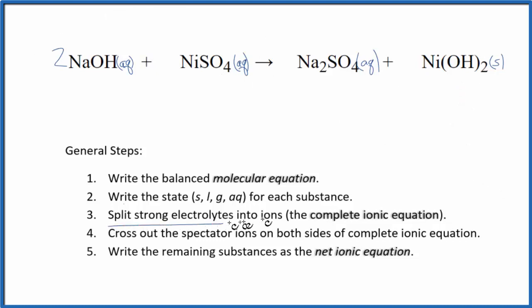Now we can split the strong electrolytes into their ions. This is the complete ionic equation. Sodium is in group one, so it has a one plus charge, and the hydroxide, that's always one minus. So we have two sodium ions, and I won't write the states right now. Let's do that at the end. So we have two sodium ions plus two hydroxide ions, that OH minus.